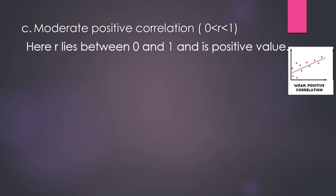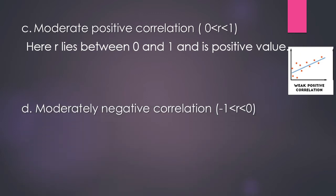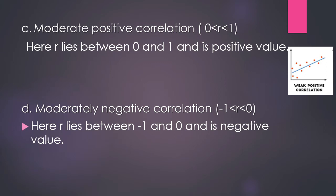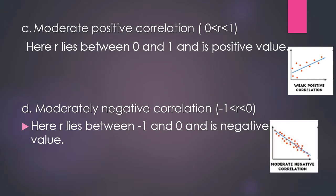Next is moderate negative correlation, where r lies between minus one and zero with a negative value. In the picture you can see a moderate decline in the variables. An example is age and basal metabolic rate (BMR) — as age increases, BMR decreases gradually. This is said to be moderate negative correlation.